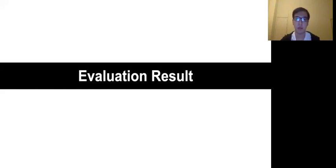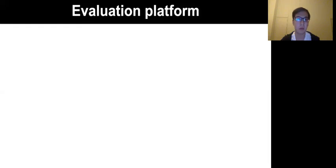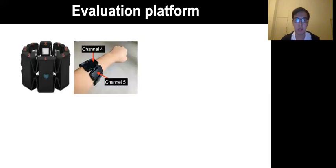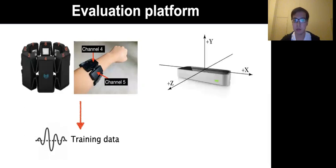Now I'll briefly show some of the main evaluation results of our system NeuroPose. Here is our evaluation platform. The user wears the Myo armband with channel 4 towards up. This provides the training data. While the Myo sensor provides EMG data for 3D pose tracking, the Leap Motion sensor serves as ground truth for validation and provides labels for training our machine learning model.